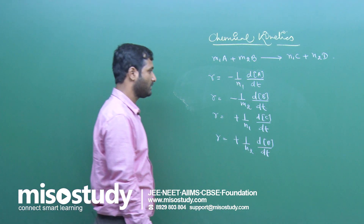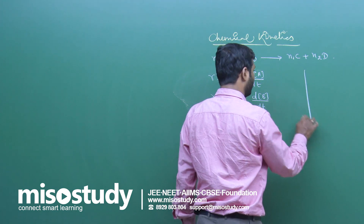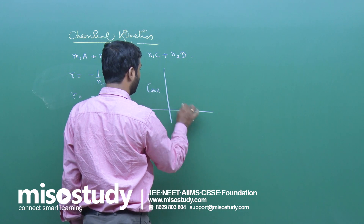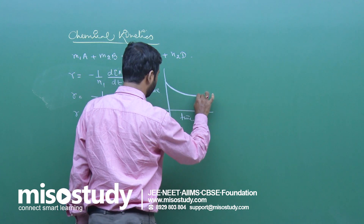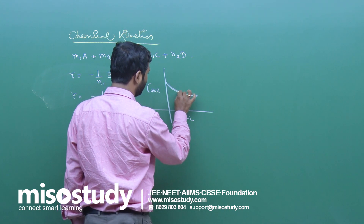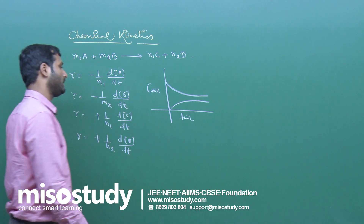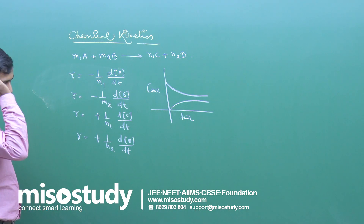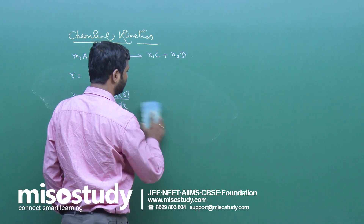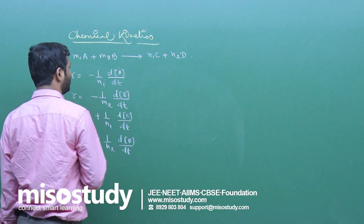This is the rate expression. If I draw a graph between concentration and time, the reactant concentration decreases while the product concentration increases over time.